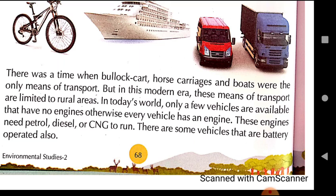Boats were used for going from one village to another, one city to another, because in those times, so many bridges were also not there. Boats were the only means to cross the river. But with advancement of technology and passage of time, many vehicles were invented — bicycles first, then scooters, then motorcycles. Now almost all means of transport are engine-operated.